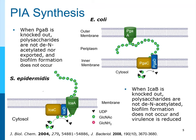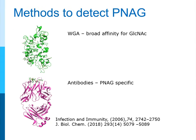We needed some way of quantifying changes in polymer production using these inhibitors — not just detecting effects on some other aspect of bacterial growth affecting our biofilm assays. People have commonly used WGA, a lectin with affinity for N-acetylglucosamine, which is commercially available and easy to work with. The challenge is that bacteria make many things containing N-acetylglucosamine, and there's a lot of non-specific binding to other structures, so you have to be careful that what you're looking at is actually the poly-N-acetylglucosamine you're interested in.